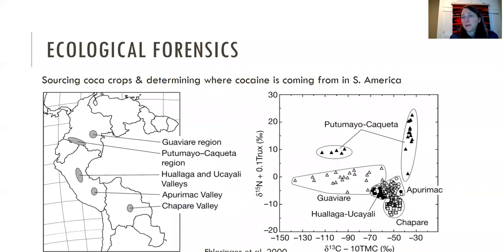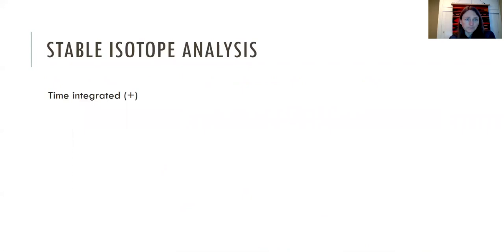So this is another example of ecological forensics. Here's another one. Ecologists were asked to help determine where the coca leaves were coming from in this cocaine that was being shipped from South America. And so using, in this case, nitrogen-15 and carbon-13 isotopes, you could actually tell the region of South America that these coca leaves were coming from that I guess they were eventually going to be used to make cocaine.